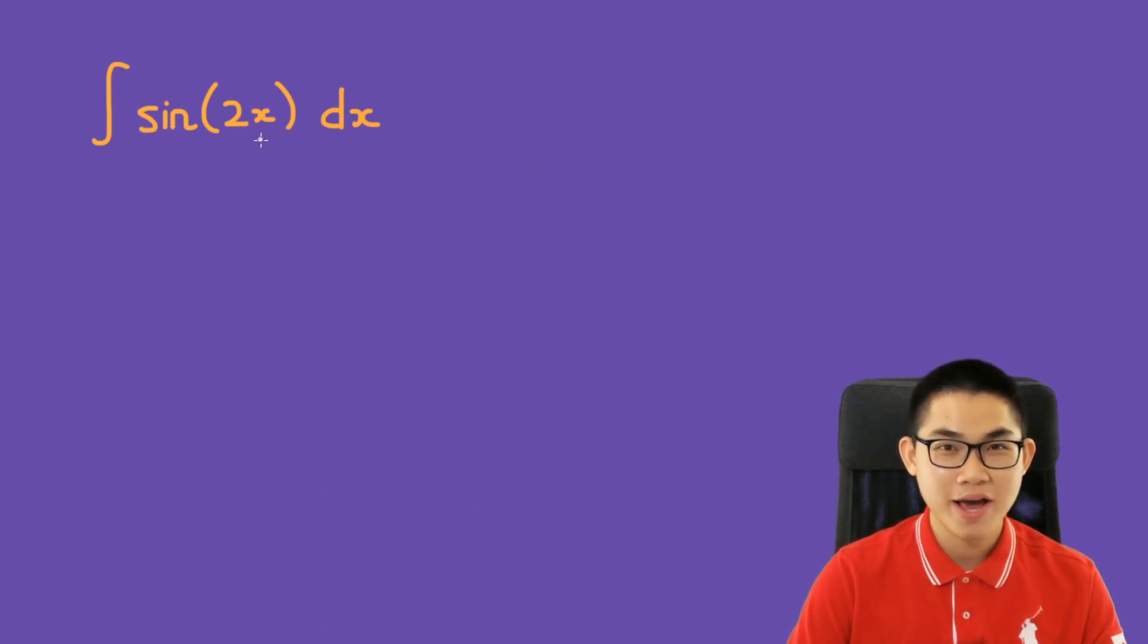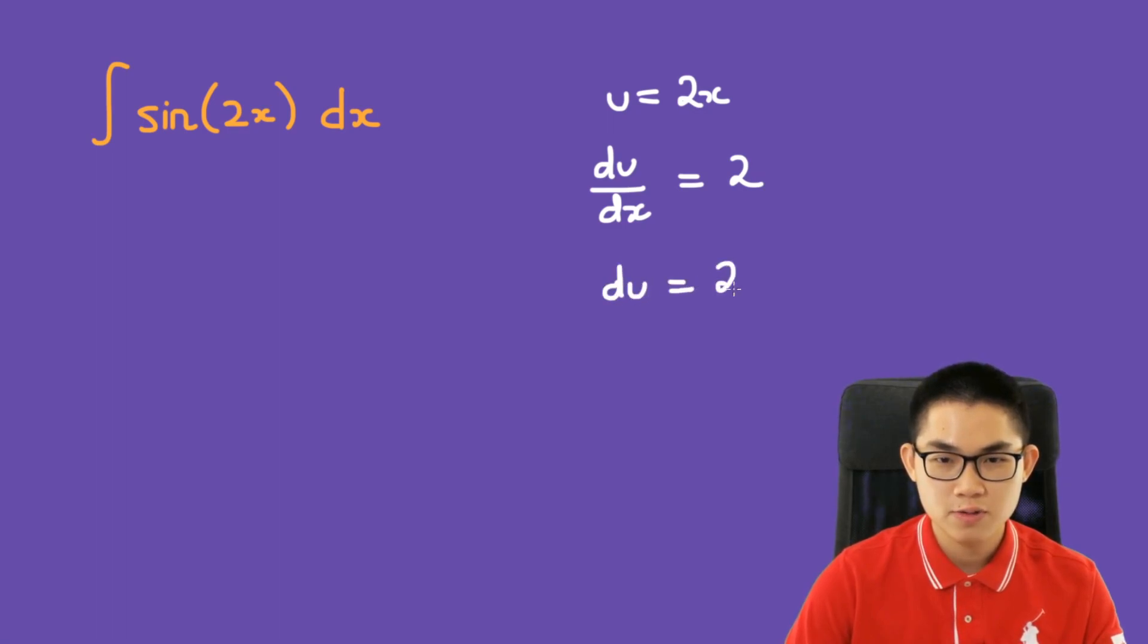The integral of sine 2x dx. So let u equal to 2x, then du over dx is equal to 2, then du is equal to 2 times dx, and dx is 1 over 2 times du.